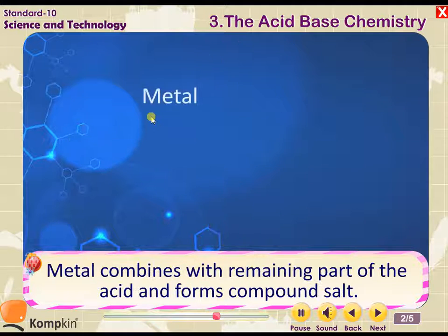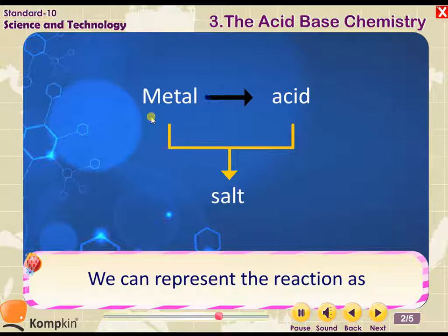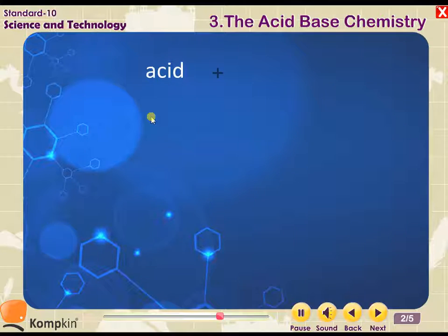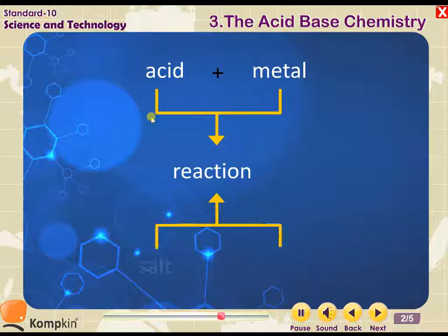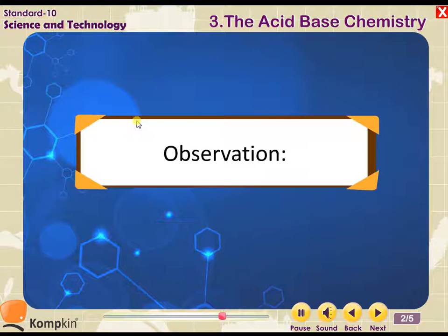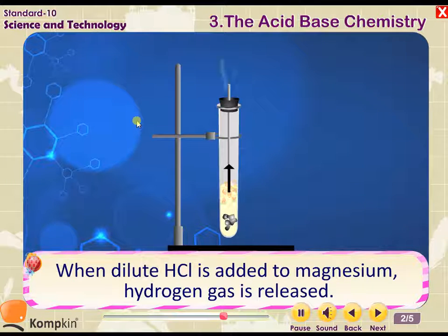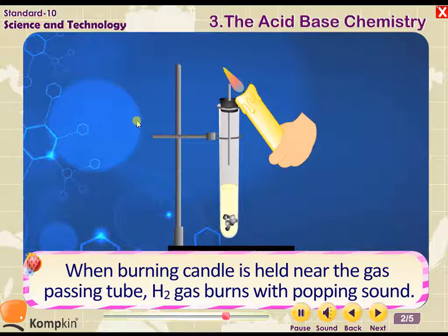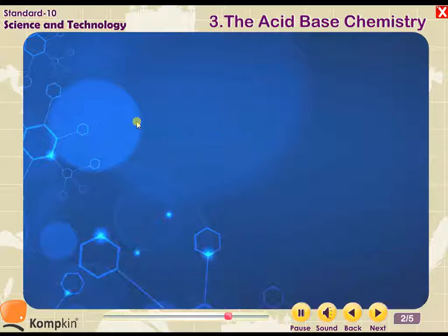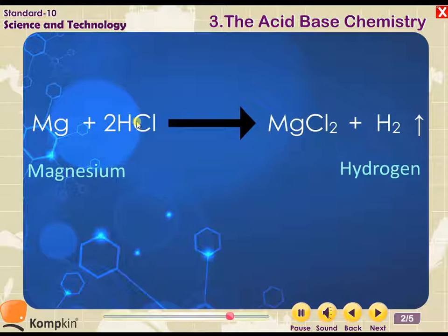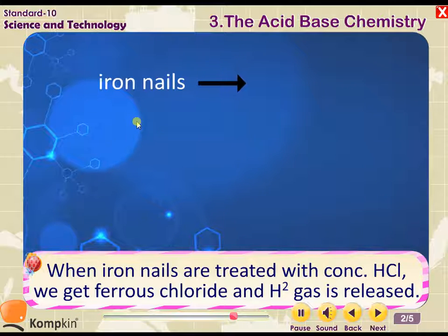The bubbles given out during the reaction are H₂ gas. Hydrogen is displaced by the active metal from the acid. The metal combines with the remaining part of the acid and forms a compound called salt. The reaction is: acid + metal → salt + hydrogen gas. When dilute HCl is added to magnesium, hydrogen gas is released. When a burning candle is held near the gas passing tube, H₂ gas burns with a popping sound.